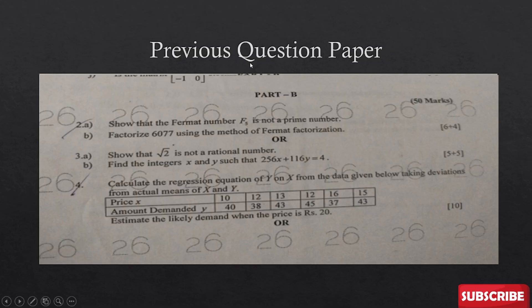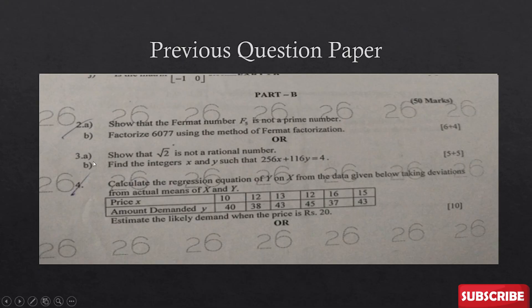In Part B, 2a asks: 'Show that Fermat number F5 is not a prime number,' and the next part asks to 'Factorize 6077 using the method of Fermat factorization.' Question 3a is 'Show that √2 is not a rational number' — from Unit 1 integers topic. This confirms one question from each topic in Unit 1, as discussed earlier.